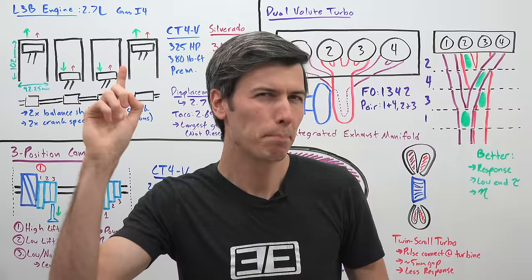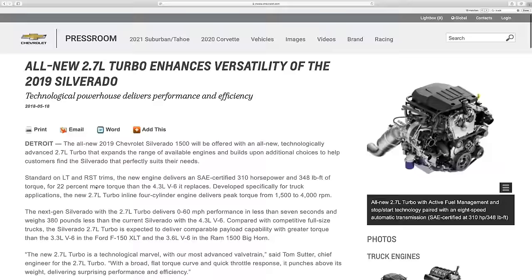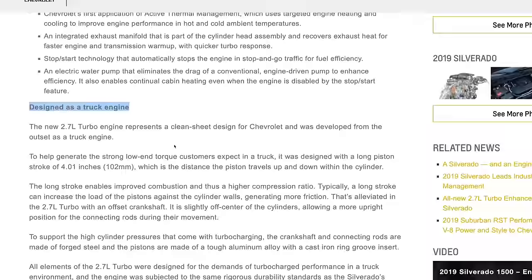But first I need to do a little trash talking because as an engineer it is my duty to combat confusing marketing messages. So the engine we'll be discussing in this video is GM's L3B engine. GM describes it as developed specifically for truck applications. They say it is designed as a truck engine. They say this engine is a clean sheet design for Chevrolet and was developed from the outset as a truck engine.